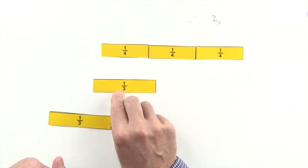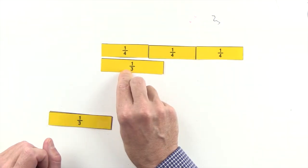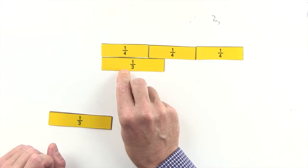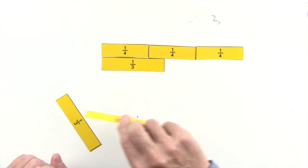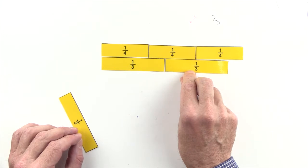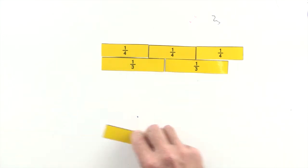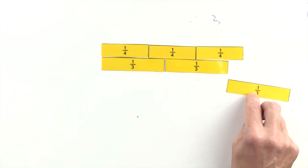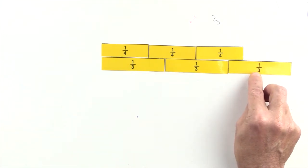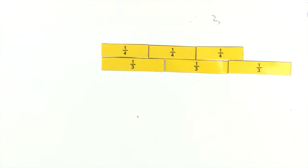One third and two thirds are less than three quarters, and three thirds are greater than three quarters. So we can't use thirds to make an equivalent fraction to three quarters.